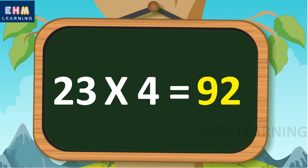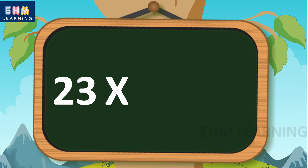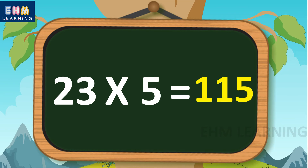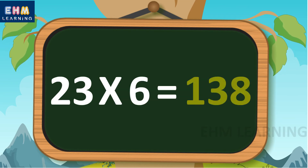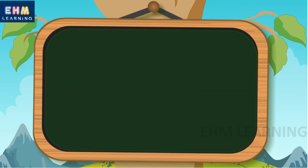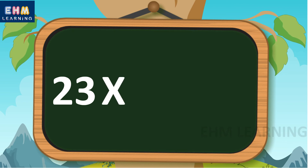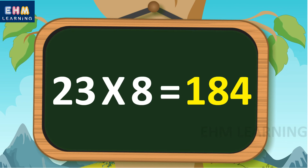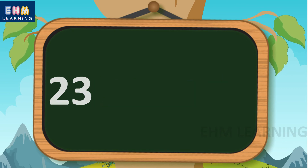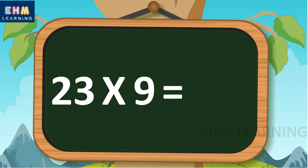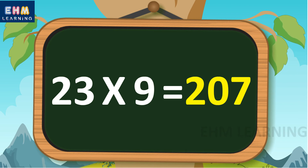23 4s are 92, 23 5s are 115, 23 6s are 138, 23 7s are 161, 23 8s are 184, 23 9s are 207.